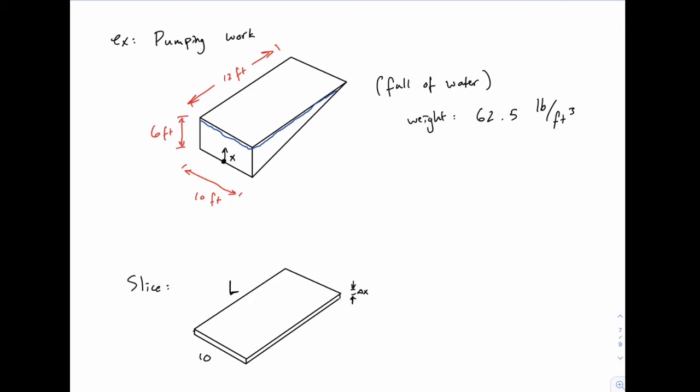So just like before, that length will depend on x, and again notice that it changes linearly, so it will be something like mx plus b. To calculate that, we can again use the algebraic or geometric approaches. Just for sake of time here, I'm going to stick to the algebraic approach, where we know the length at two places.